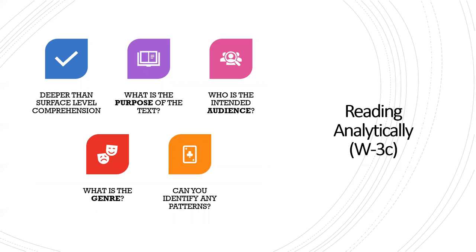What we're going to be doing in this class is reading analytically. When we read an article or essay, we're not just going to read it for comprehension — we're going to examine the writing and think about the issues and topics raised in each reading. Reading analytically is going deeper than surface-level comprehension. As shown on this slide, we are examining the elements of the rhetorical context: the purpose of the text, who the intended audience might be, the genre and all its conventions. We can also look at a text in terms of structure — identifying patterns such as headings or subheadings, or repeated phrases the author uses that might be important.